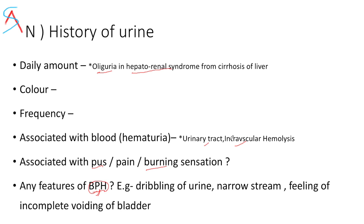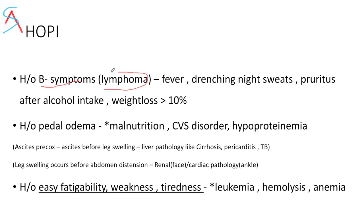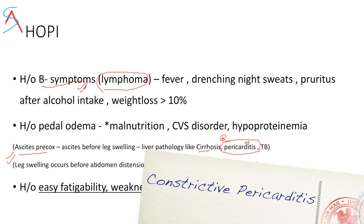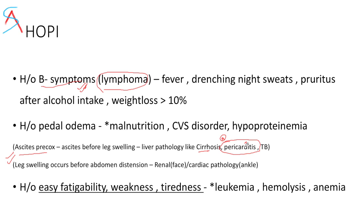If you suspect lymphoma, never forget to ask the B symptoms: fever, drenching night sweats, pruritus after alcohol intake, and weight loss more than 10%. If these are present, prognosis is poor. Pedal edema can occur due to malnutrition, cardiovascular disease, or hypoproteinemia. In ascites precox, ascites occurs first and leg swelling later — common in cirrhosis or pericarditis. In constrictive pericarditis, there is selective partial constriction of the hepatic vein entering the right atrium, altering hepatic venous drainage, resulting in hepatic dysfunction and oozing of ascitic fluid. In renal pathology, facial puffiness accompanies pedal edema. In cardiac causes, pedal edema is at dependent parts like the ankle.